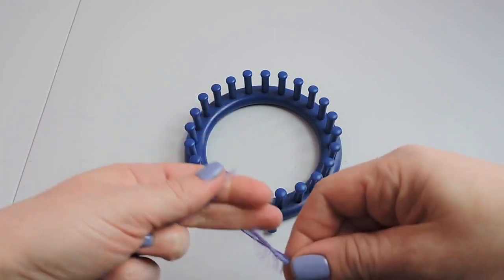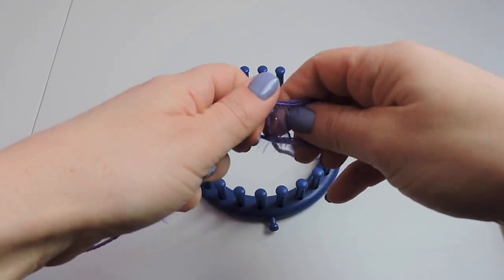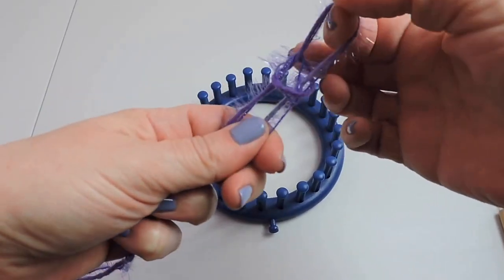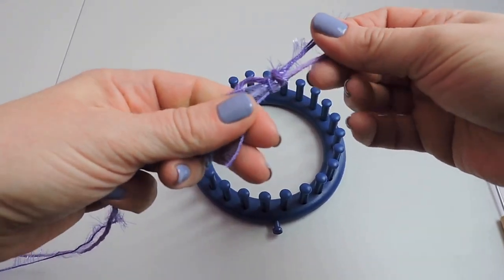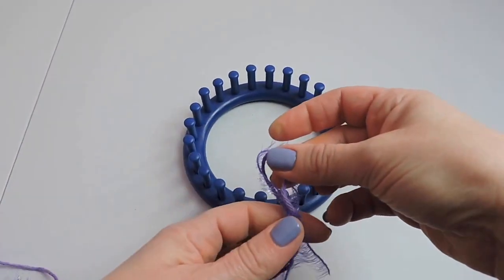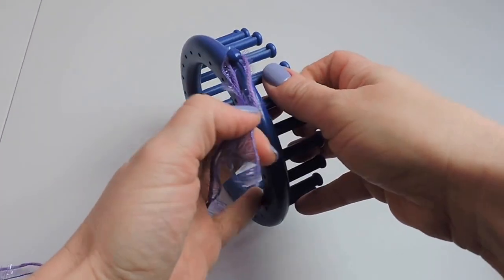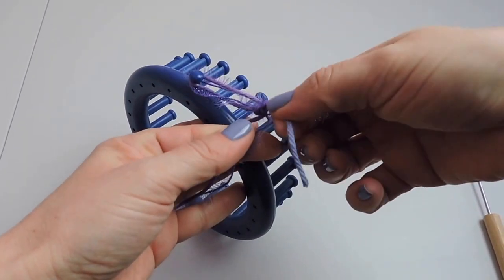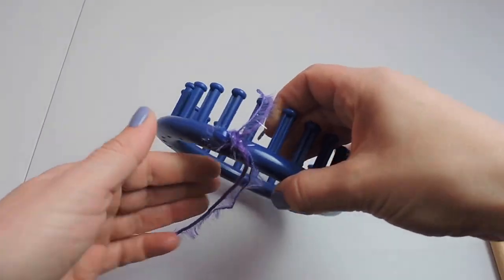We're gonna make a slipknot, and we're gonna attach it on the anchor peg. You don't want to tie it too tight, but just enough that it's not going to give.